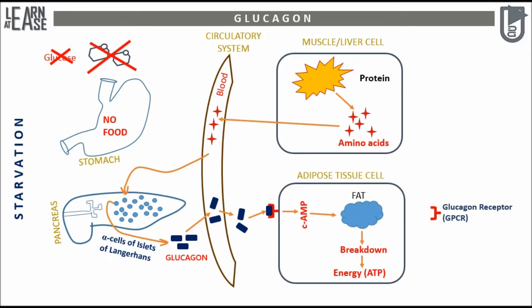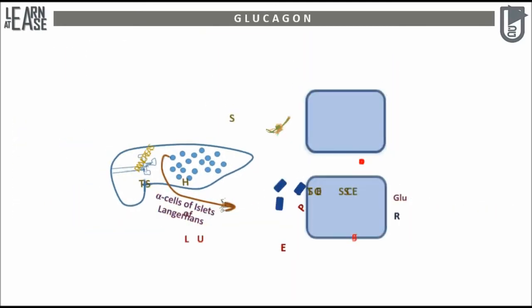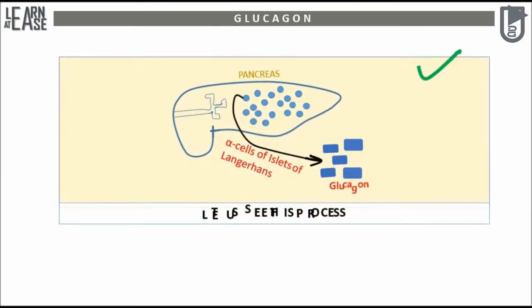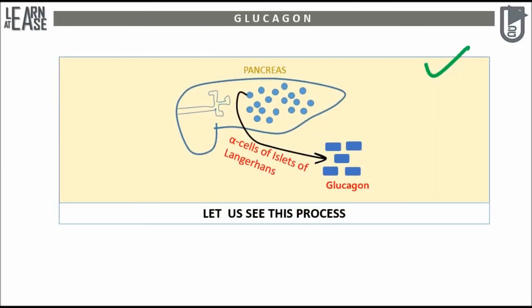This is the basic outline of glucagon release and action. Now I will explain the production of glucagon by the alpha cells of islets of Langerhans.